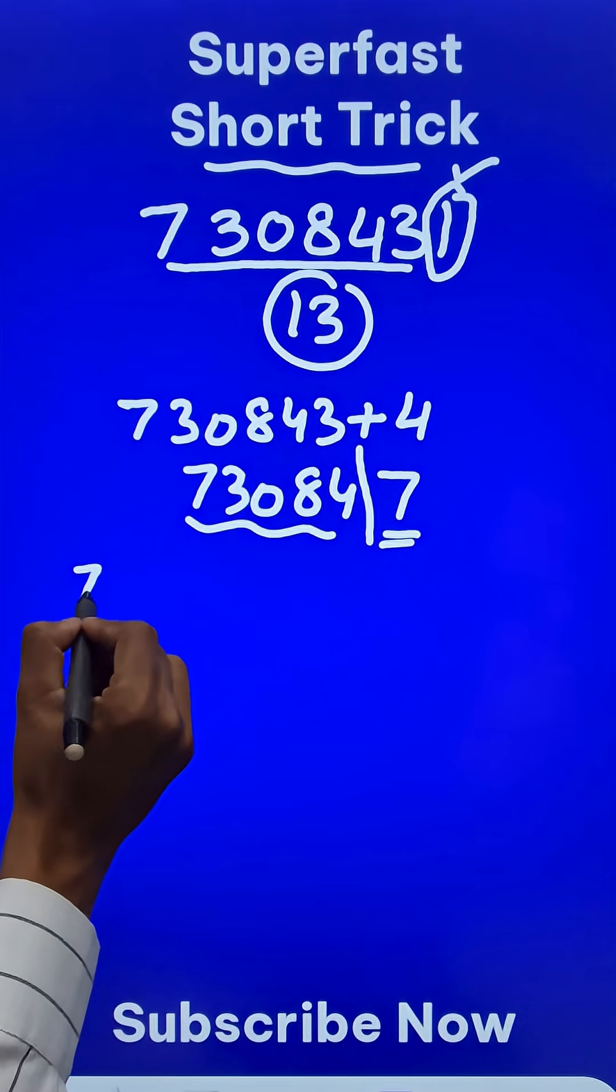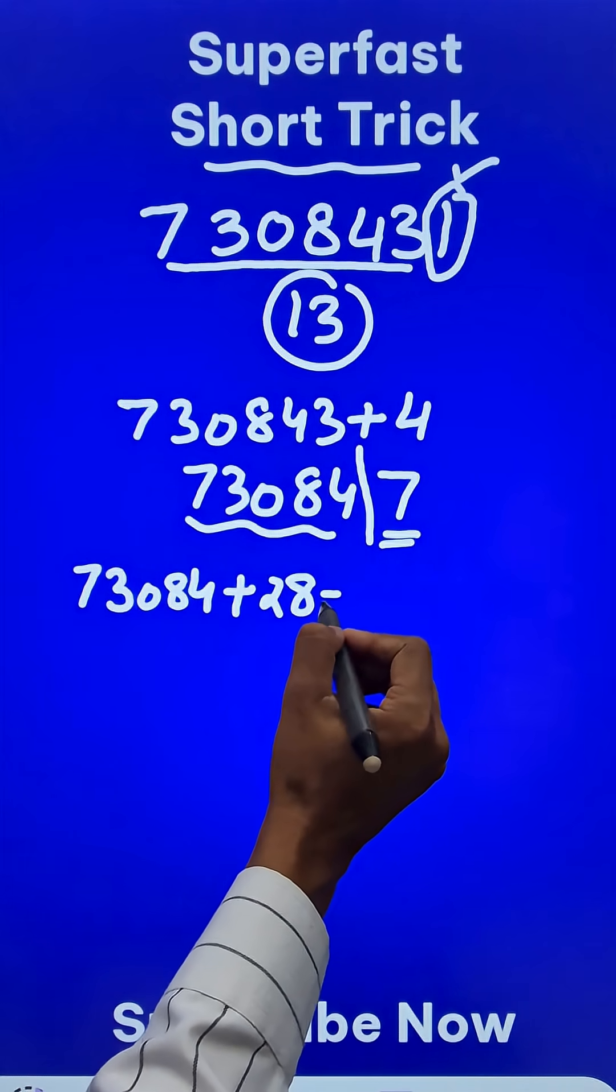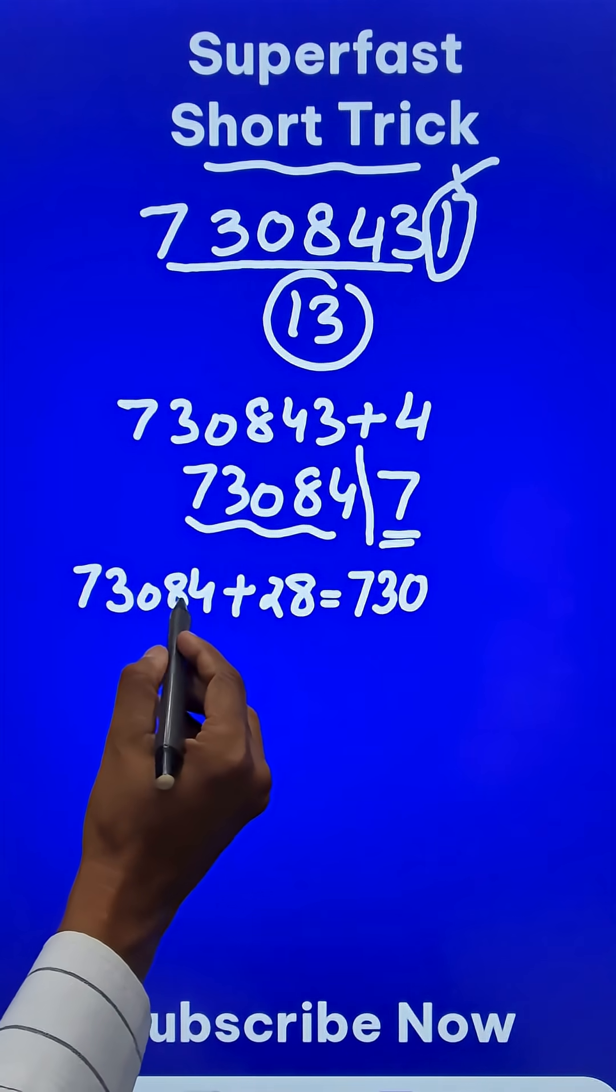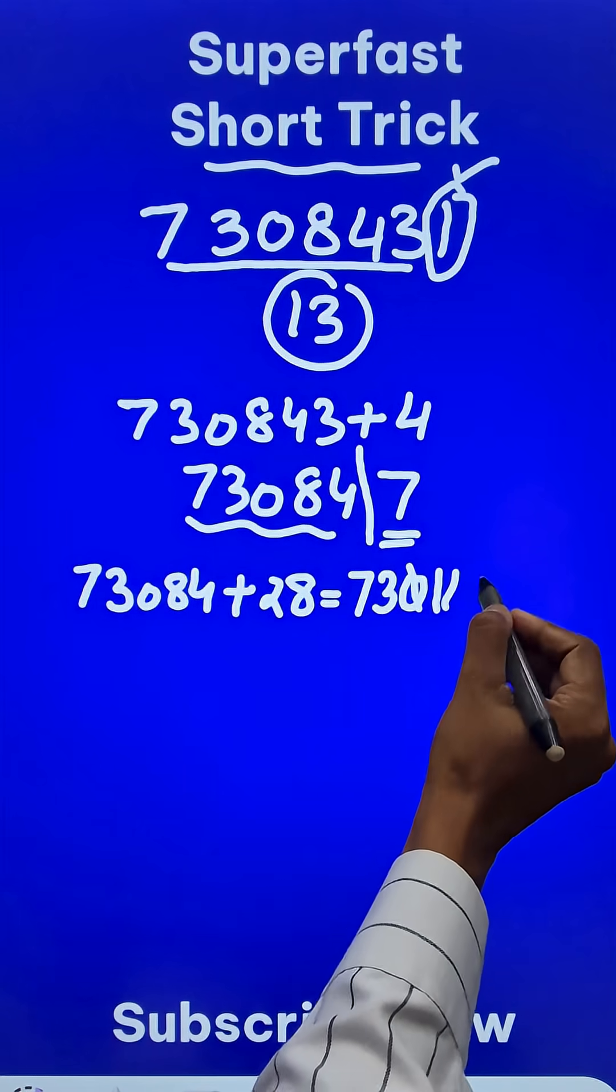So here I have 73084 plus 7, 4s are 28, and that gives me 73084 plus 28 is 112. So the 0 here becomes 1 and then 12, right?